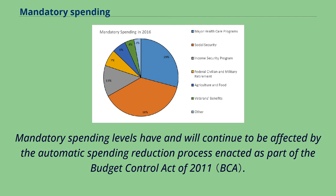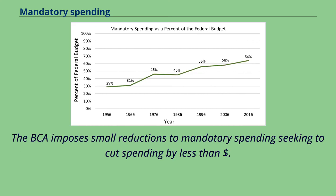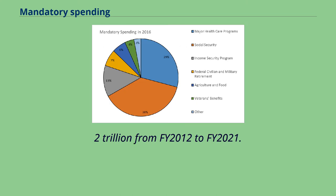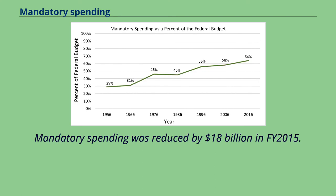Mandatory spending levels have been and will continue to be affected by the automatic spending reduction process enacted as part of the Budget Control Act of 2011. The BCA imposes small reductions to mandatory spending, seeking to cut spending by less than $2 trillion from FY 2012 to FY 2021. Mandatory spending was reduced by $18 billion in FY 2015.